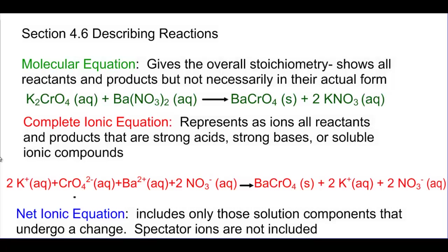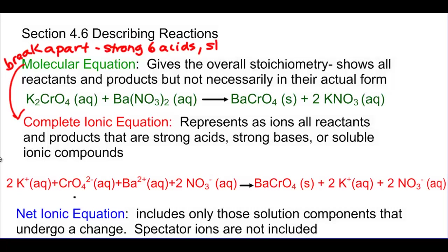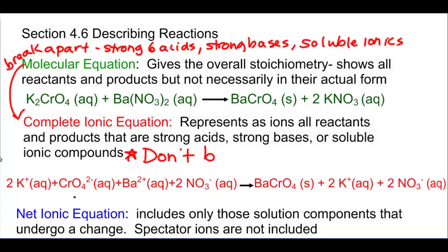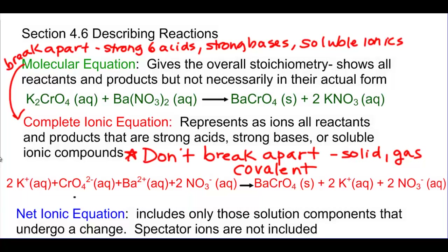In going from the molecular equation to the complete ionic equation, all you do is put on your Misfrizzle glasses and break things apart. You break apart the strong six acids — so you have to remember those — the strong bases, and the soluble ionic compounds. What you keep together — what you don't break apart — is anything covalent other than a strong acid, anything solid, anything gaseous, and weak acids and bases.